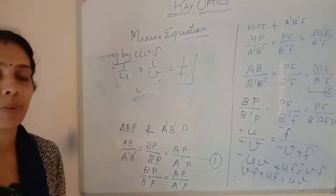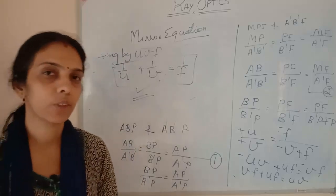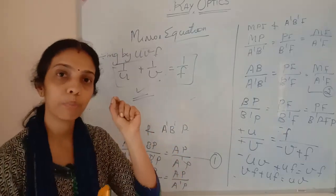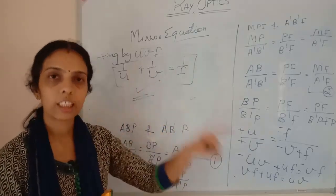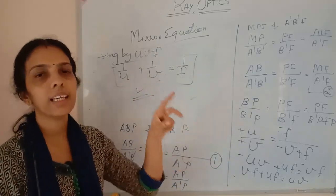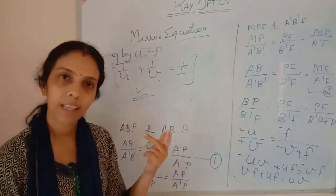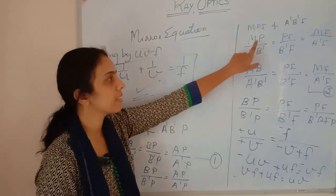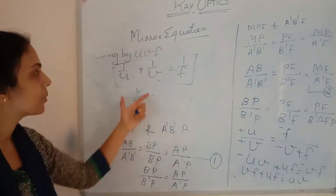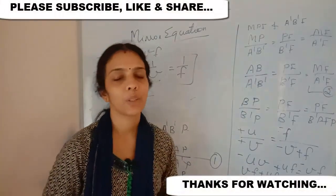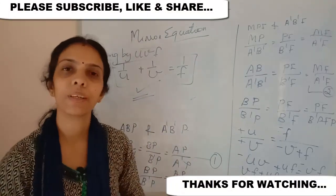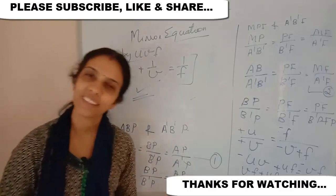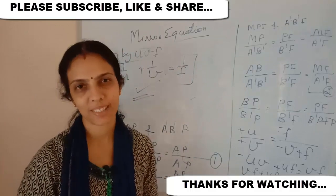You now understand how we derived the mirror formula for a concave mirror. Try it for a convex mirror — it's easy. The key is to identify the two pairs of similar triangles: one pair including P, and the other including F. Triangle ABP with A'B'P, and triangle PMF with A'B'F, where PM equals AB. Try it and let me know through the comment box. If you like the channel, please subscribe. Thank you for watching. Bye.